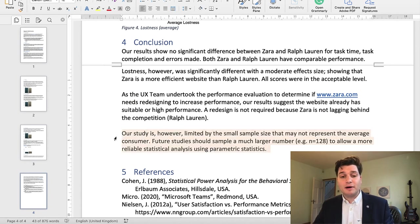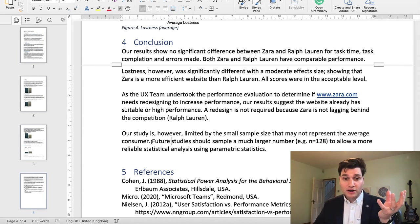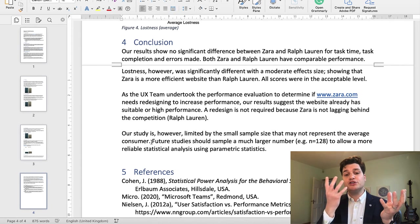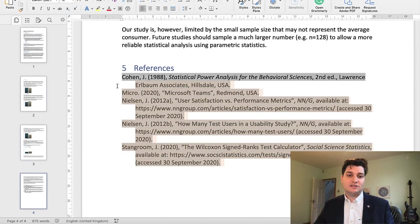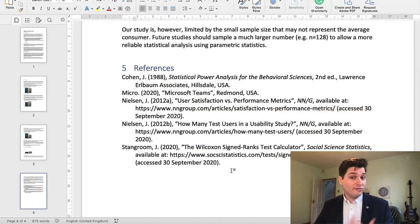And then we go on to the final part, which is the limitation of our work. So we have a small sample size. It doesn't represent the average consumer. So future studies must have a larger sample. You've got the problem with the current study and got the future tense. Then we finish off with the references. And in case you're wondering, I use Mendeley for all my references because it is the best way.